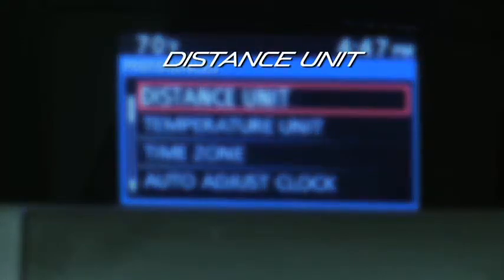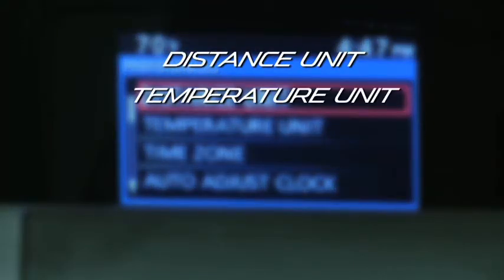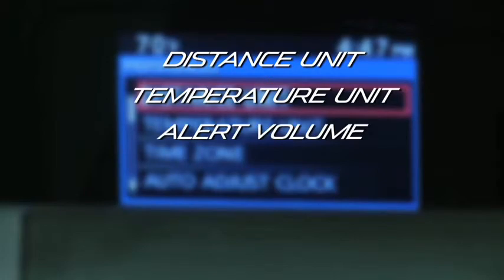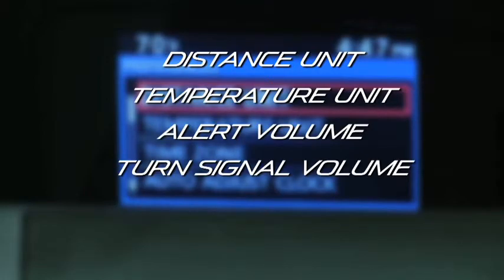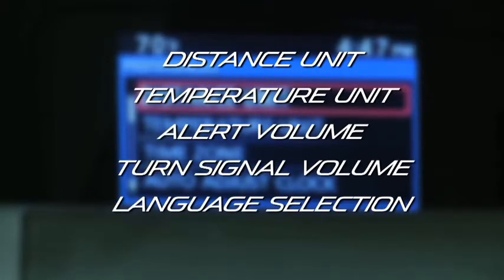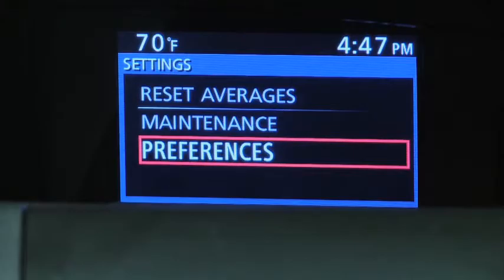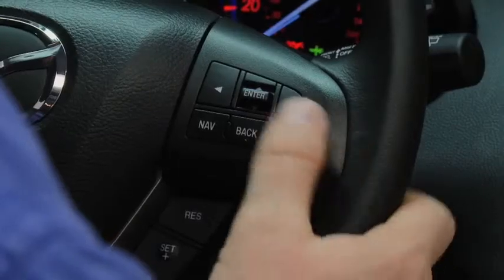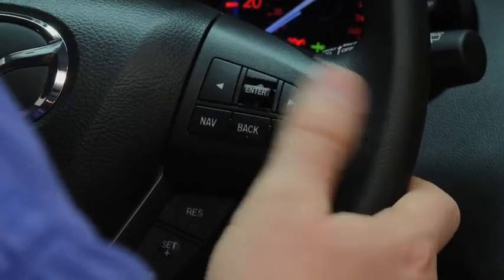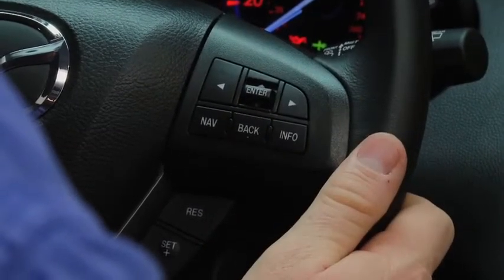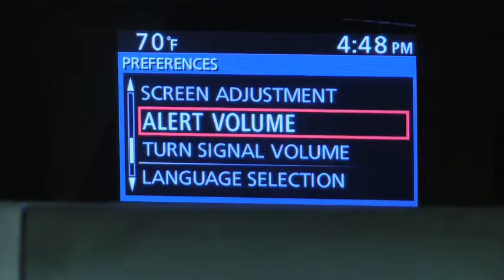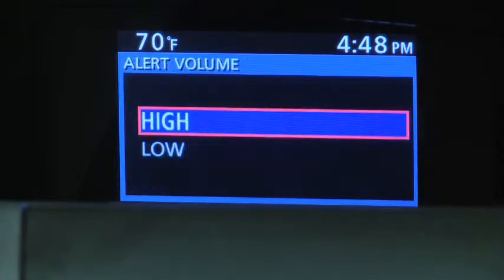Under Preferences, to change the Distance Unit, Temperature Unit, Alert Volume, Turn Signal Volume, or Display Language, go to the Settings screen. Use the Enter switch to select Preferences. Select the setting item, then select the desired setting.